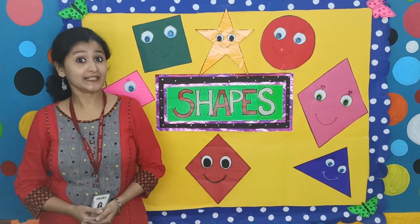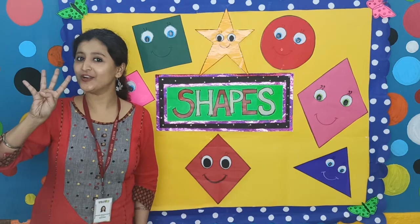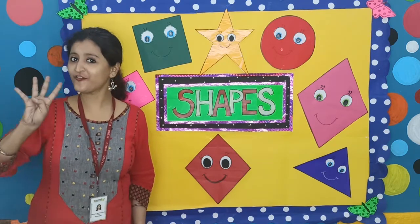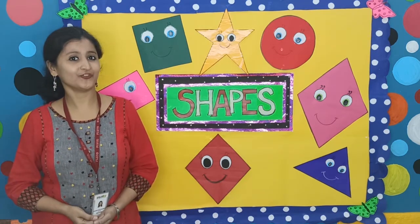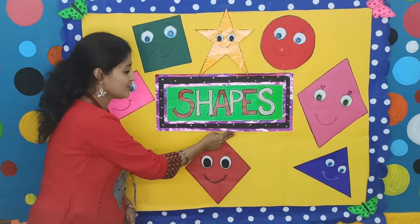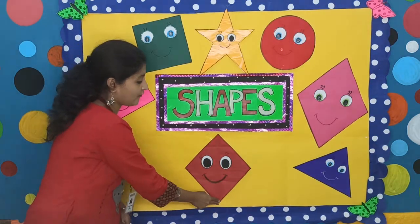And Daisy the Diamond has four corners. How many corners? Four corners. Let us count those corners: one, two, three, four.